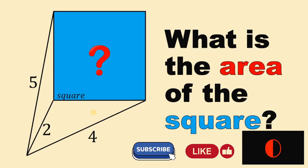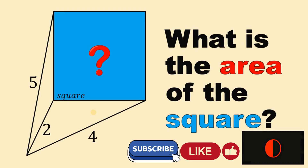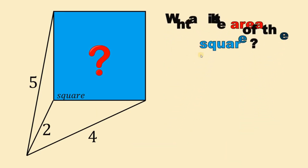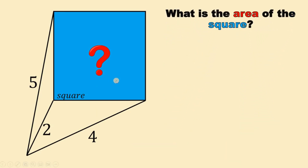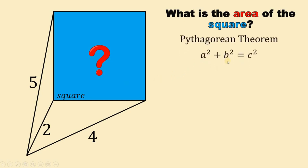And now, let's answer this question together. So, given this figure, our goal is to find the area of this square shaded in blue. Now in order to answer this kind of question, there are a lot of ways, but since it is geometry, I want to use the Pythagorean theorem, which is equivalent to a squared plus b squared equals c squared.